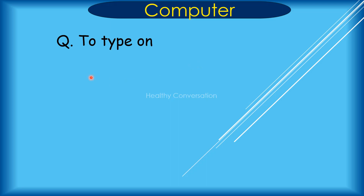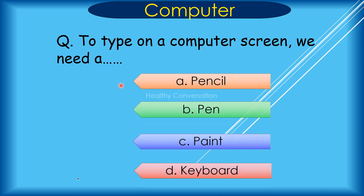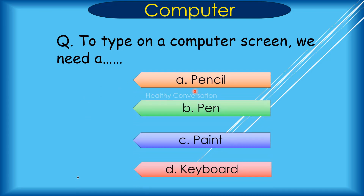Question: To type on a computer screen, we need a dash. A. Pencil, B. Pen, C. Paint, D. Keyboard. Correct answer is D. Keyboard.